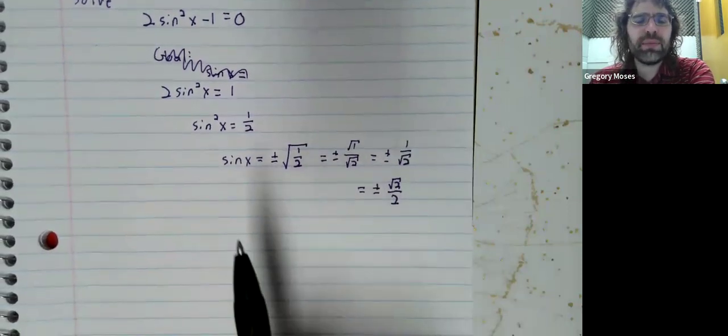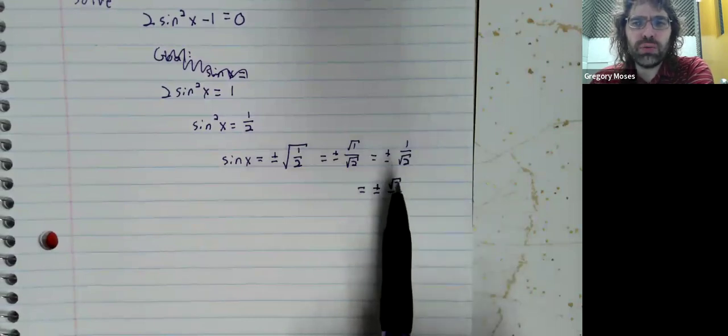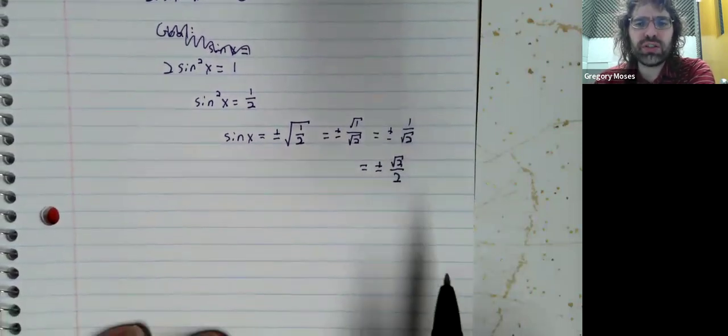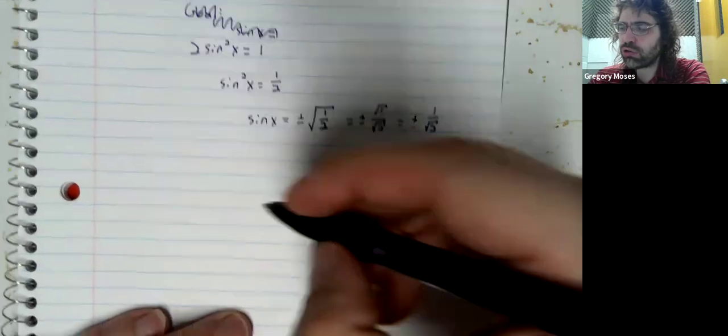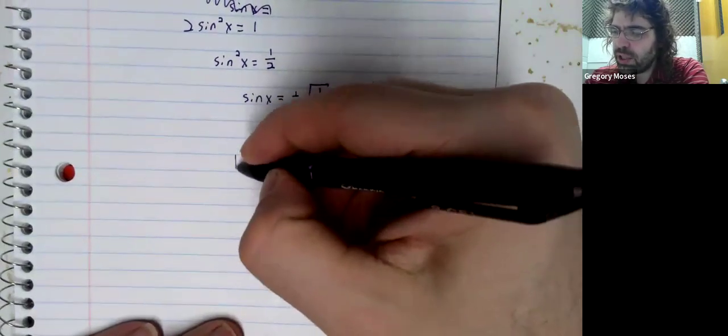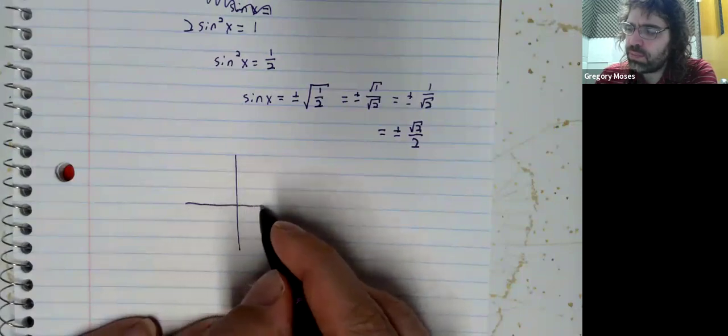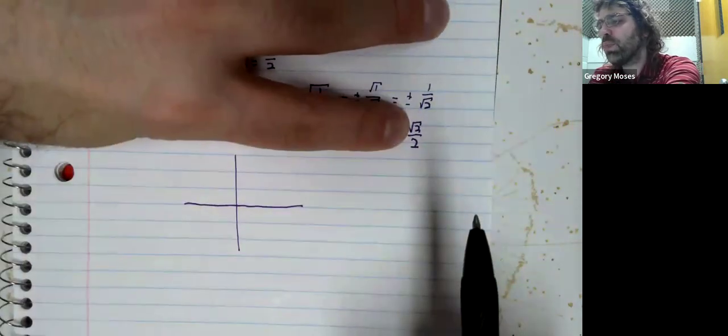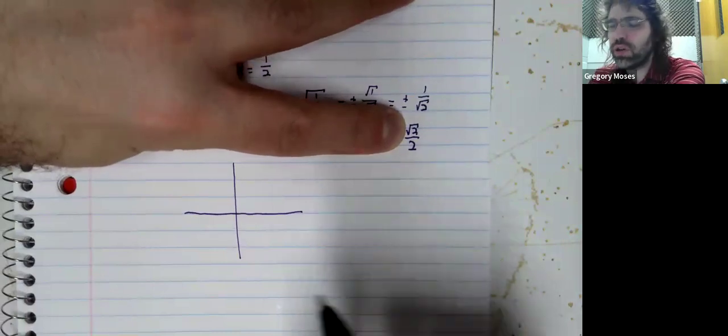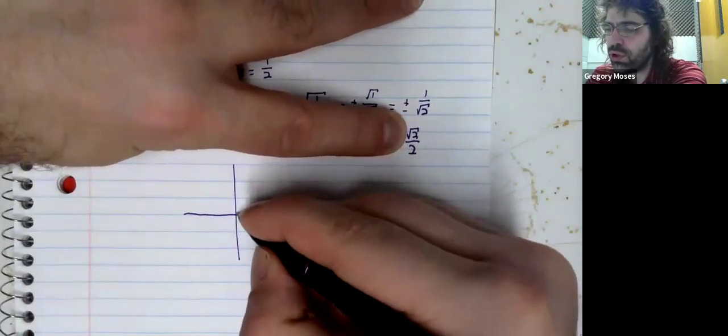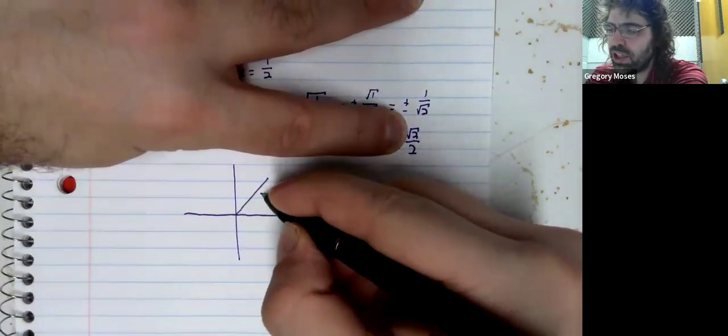And again, I hope you know some solutions to this already. In particular, the sine is the positive square root of 2 over 2 here.